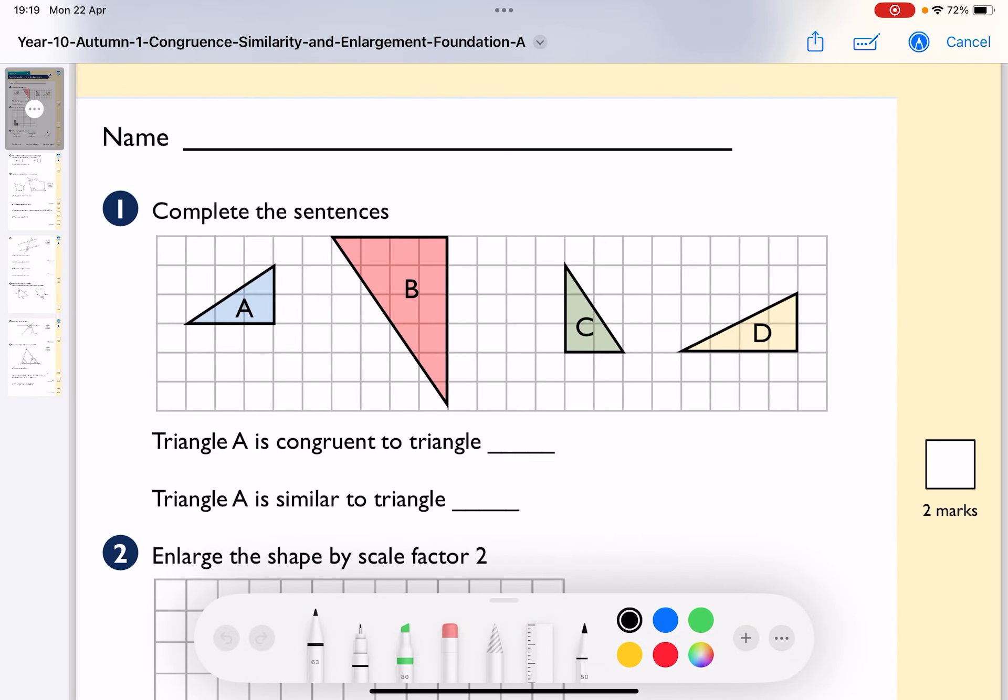So first of all, complete the sentences: triangle A is congruent to triangle whatever. The word congruent means exactly the same. So when I look here, A is exactly the same as C. It doesn't matter that it's been rotated or reflected or anything like that. It's two by three. So A and C are congruent.